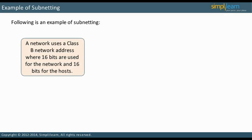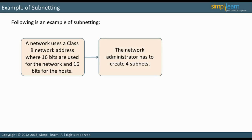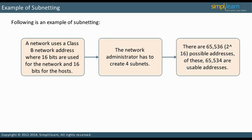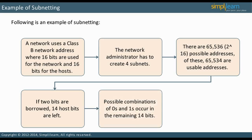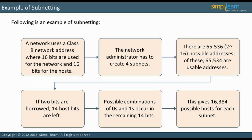Suppose a network uses a Class B network address where 16 bits are used for the network and 16 bits are used for the hosts. The network administrator should create four subnets. There are 65,536 (2 to the power of 16) possible addresses available to assign to hosts, of which 65,534 are usable. Since four subnets require borrowing two bits (2 to the power of 2), that leaves 14 host bits, yielding 16,384 possible hosts but only 16,376 usable hosts, because two addresses are reserved per subnet.